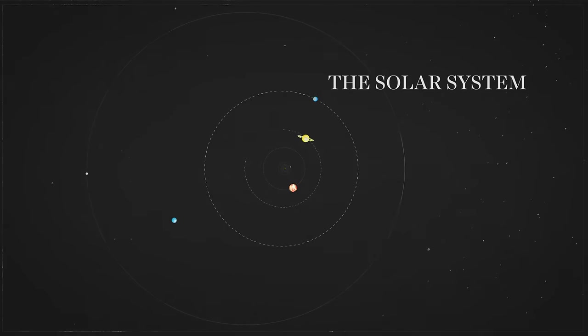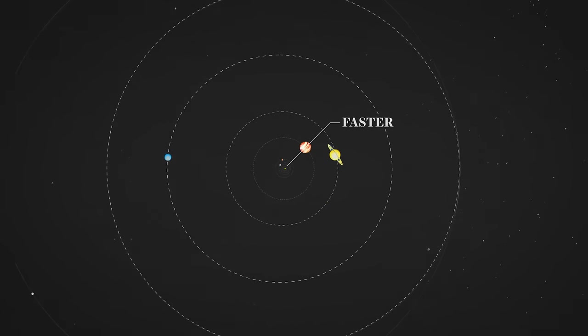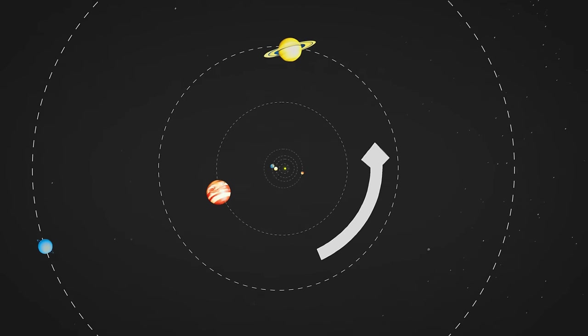Let's start with the basic layout of the solar system. The planets closest to the sun move faster and the outer planets move slower, but they all go in the same direction.